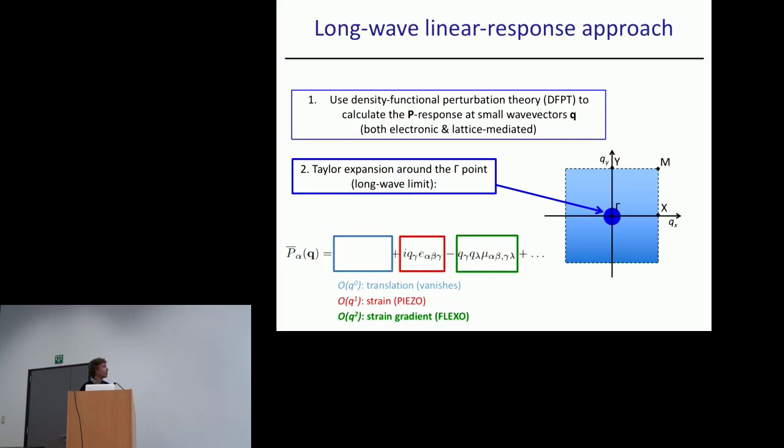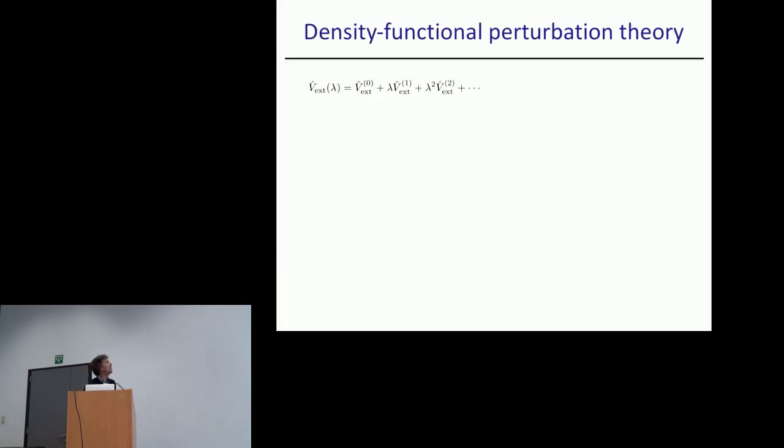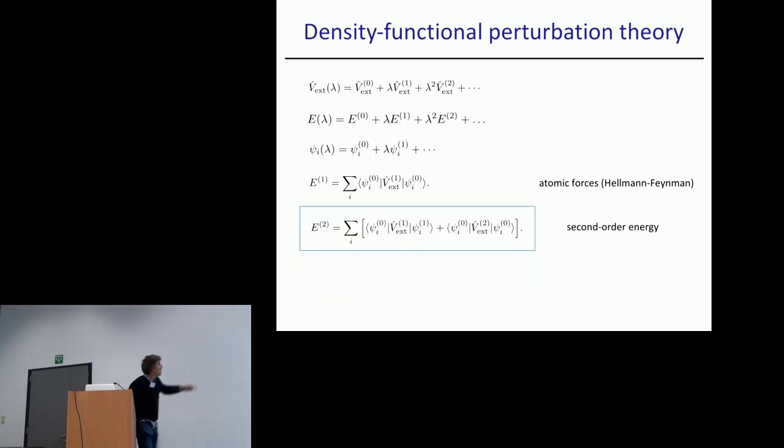Let me give a quick overview of density functional perturbation theory. We start with an external potential and develop a power expansion in terms of some perturbation parameter lambda. Then the energy and wave functions can be developed in powers with respect to this parameter. We can write an expression for the derivatives of the total energy. The first order are generalized forces written in terms of ground state wave functions. At second order I need the first order wave functions with respect to lambda.